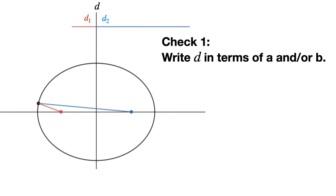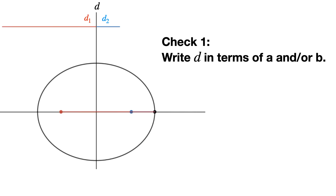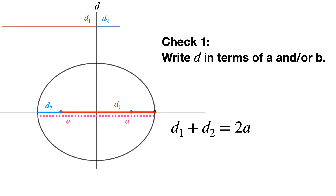To find what d equals, we rotate to a special point. The blue line d2 is the distance from one focus to the point, and by symmetry the other side is also d2. The remaining portion to the other focus is d1. So d1 plus d2 makes up the entire horizontal axis, which has length 2a. Therefore d1 + d2 = 2a, meaning d equals 2a for a horizontal ellipse.